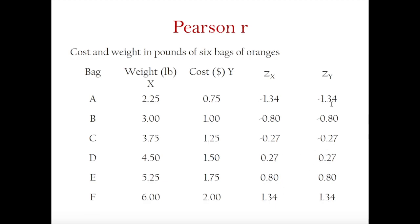For example, the Z-score of 0.75 is negative 1.34, and the Z-score of 2.25 is also negative 1.34. When the Z-scores match across both variables, that is an example of a perfect relationship. The closer the raw scores are in terms of their position in their respective distributions, the higher your Pearson R correlation coefficient will be.